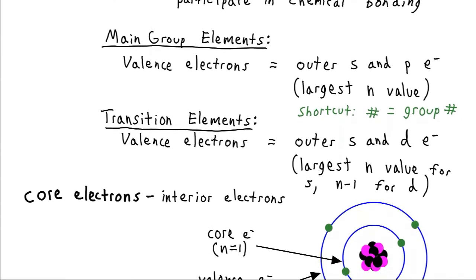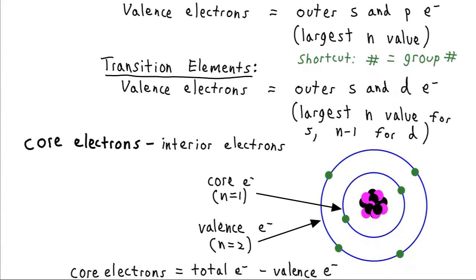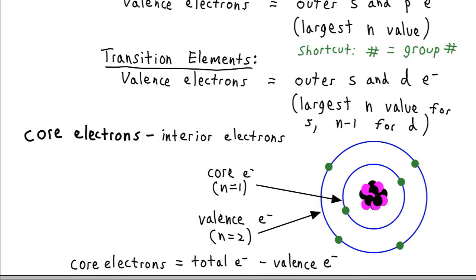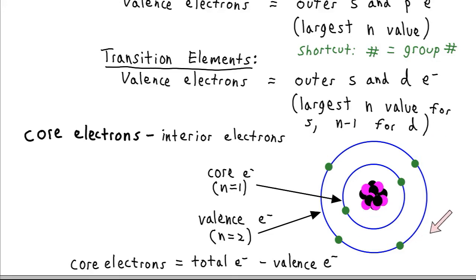The core electrons will be all the other electrons which are in the interior. So for example, in this picture we have filled up the 1s shell, so we have two electrons serving as core electrons. Here we have the n equals 2 shell, where we have two electrons in the 2s and two electrons in the 2p, which I've drawn together in this pseudo-Bohr picture. So there are four valence electrons for this n equals 2 energy level. The core electrons can be found as the difference between the total electrons and the valence electrons.